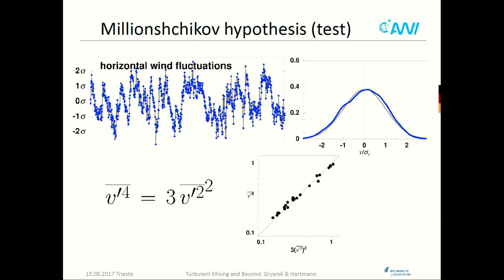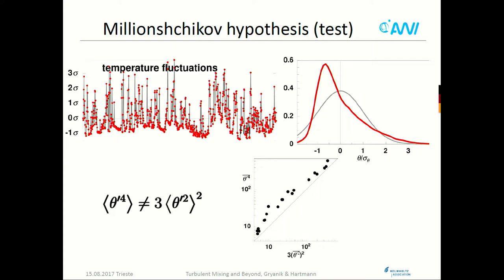These are horizontal wind fluctuations. For them, Gaussianity works because the flow is nearly homogeneous. The signal, its PDF (gray is Gaussian), and the scatter plot all show that deviation from Gaussian is very small — everything works perfectly. But life is not so good for temperature fluctuations. There you can immediately see a huge deviation from Gaussian behavior, clearly visible in the PDF. You don't even need to compute the Millionshikov test — just looking at the PDF versus Gaussian tells you.